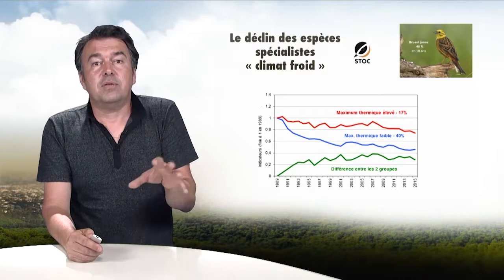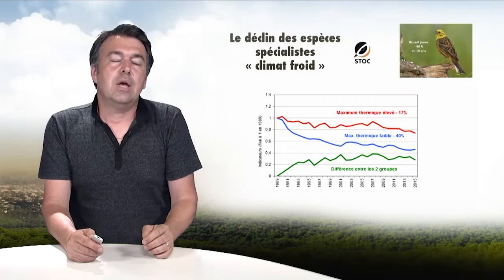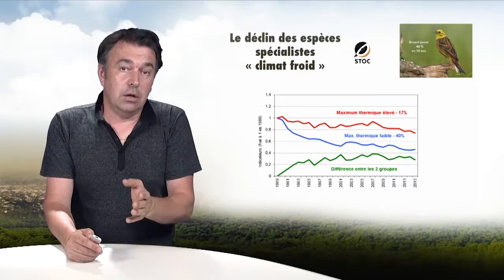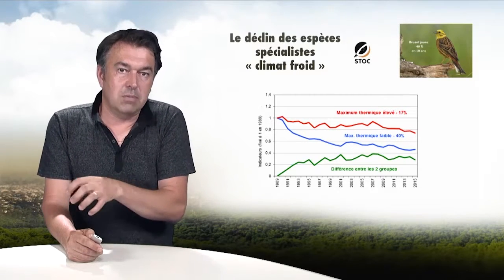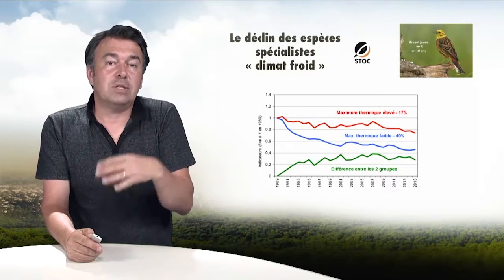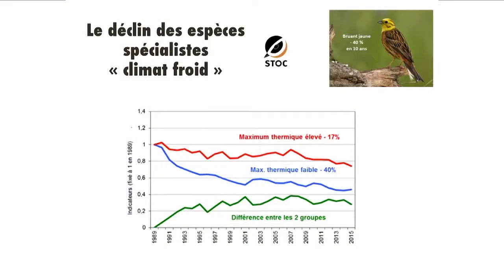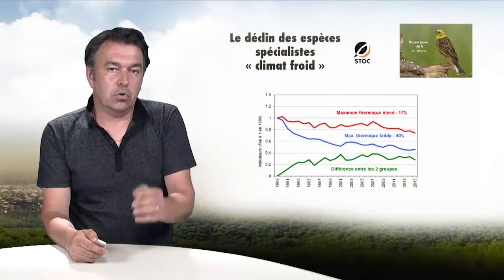The same occurs for thermally specialized species — those who prefer cold climates or warmer climates are on the decline. The difference between the two can be seen as an indicator of the impact of climate change on bird communities, beyond the impact of land use.